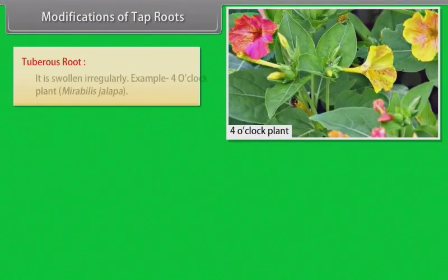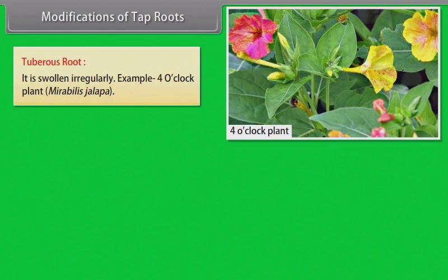Tuberous root: It is swollen irregularly. Example: four o'clock plant (Mirabilis jalapa).